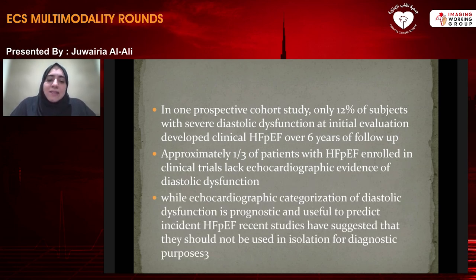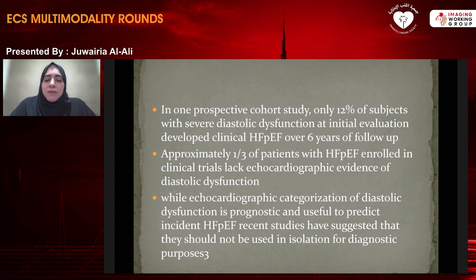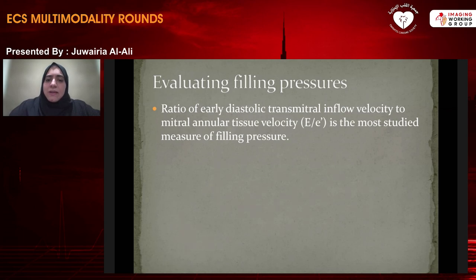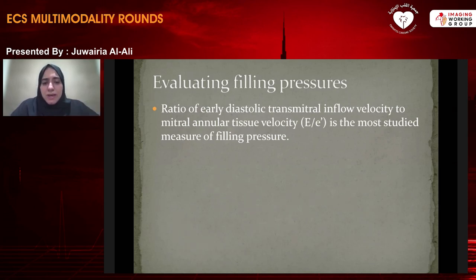Diastolic dysfunction is not used in isolation for diagnosis — you have to look at the whole clinical picture. To evaluate filling pressures, we use the ratio of early diastolic transmitral inflow velocity to the mitral annular tissue velocity, the E to E prime ratio. It is the most studied measure of filling pressure and the most robust one, though a recent meta-analysis found it has only modest correlation with invasively obtained resting filling pressures. Despite this modest correlation, it's still a valuable tool.